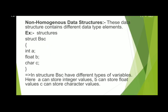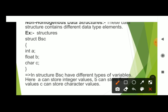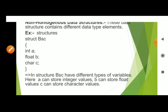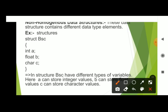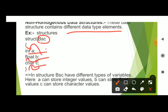Non-homogeneous data structures contain different data type elements — both same type and different types of elements. For example, a structure in C: you can store an integer variable a, a float variable b, and a character variable c. Since different values of different types are stored, this is non-homogeneous. The best example is a structure.